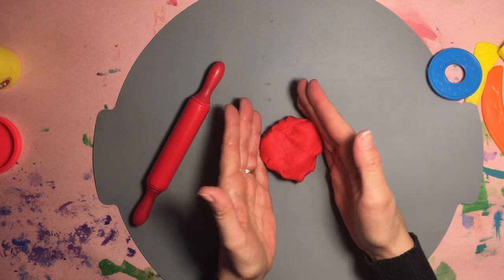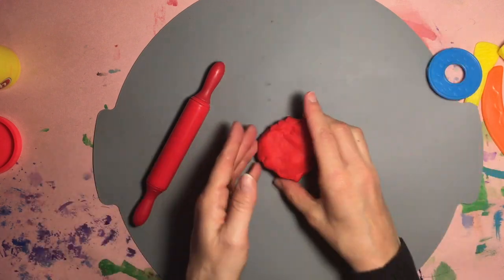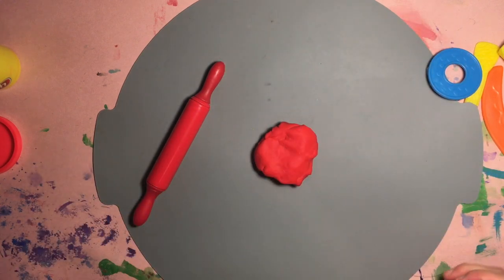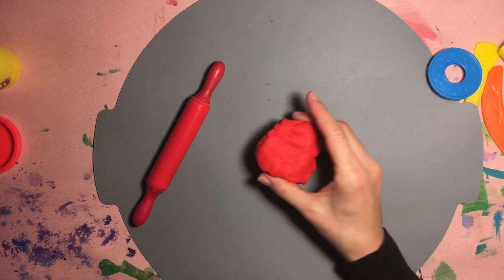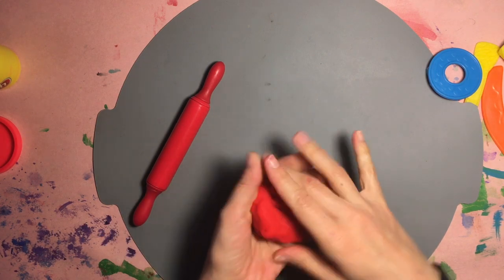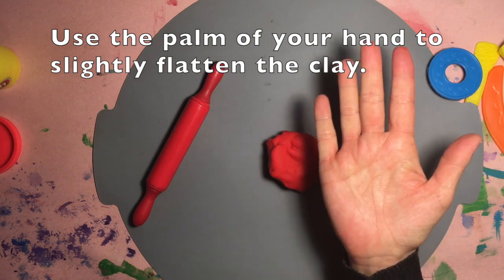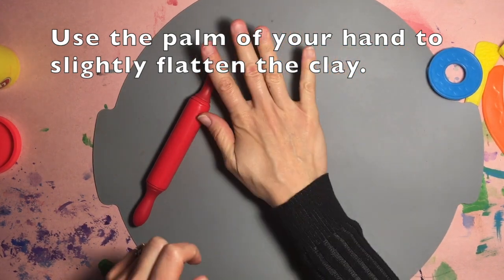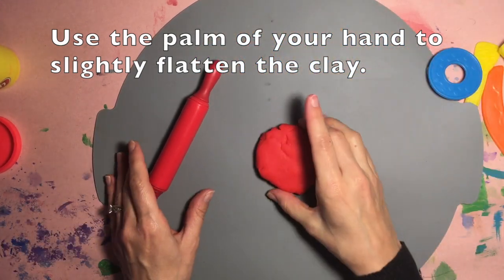I am going to show you how to roll a slab of clay. So right now I have Play-Doh, but this will work with any kind of clay. I had a ball of Play-Doh here and I placed it down. The first thing I do is take the palm of my hand and just press it a little bit to make it a little flatter.